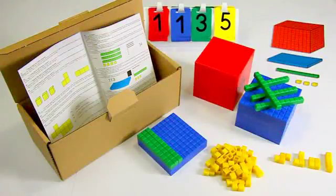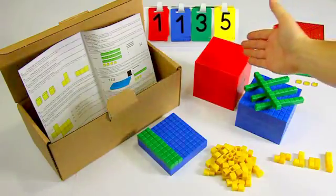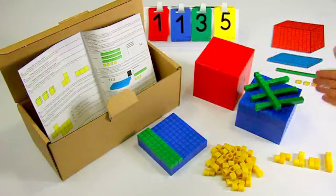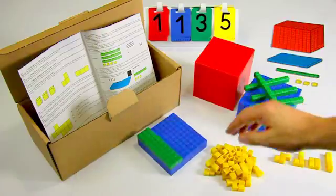Welcome to our tutorial for the base 10 set made out of plastic. This set contains a red 1000 cube, 10 blue 100 flats, 10 green 10 rods and 100 units.